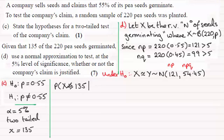So probability that X is greater than or equal to 135, given that we're assuming the null hypothesis is true, that is that P equals 0.55. And that's going to lead on to working with this approximation here. So I can say then that this is approximately the same as working out the probability that Y is greater than...